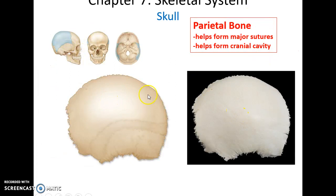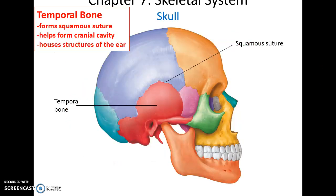The parietal bones — there are two of them — help form all of the major sutures that we have to learn the names for, and also help to form the superior portion of the cranial cavity.